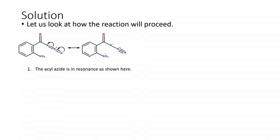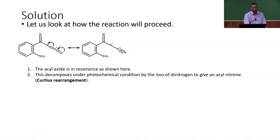We have these kind of resonance structures that are possible for acyl azide, and what happens is under photochemical conditions, the loss of dinitrogen gives acyl nitrene. Here the bond will be shifted to this one and we end up with a loss of nitrogen. This is the driving force for this reaction that leads to the formation of an acyl nitrene.